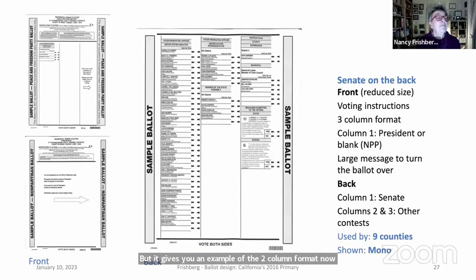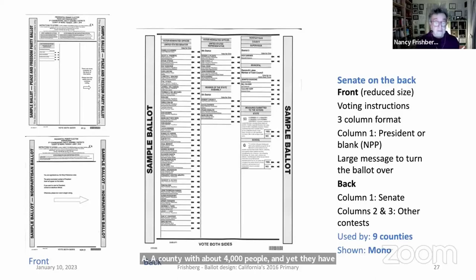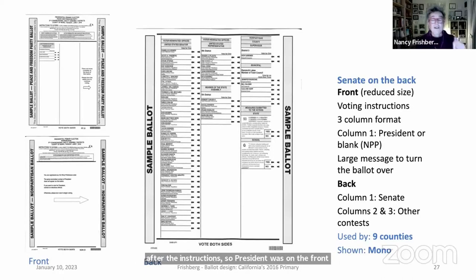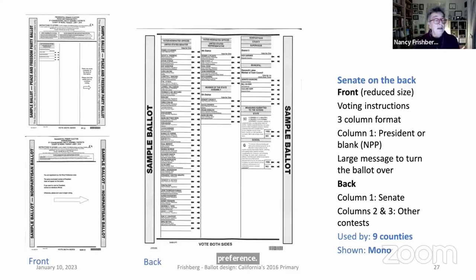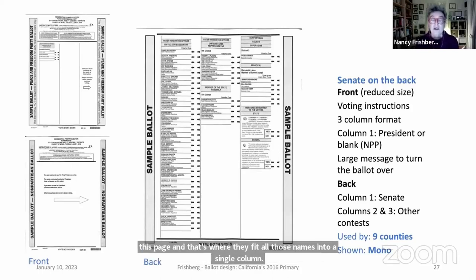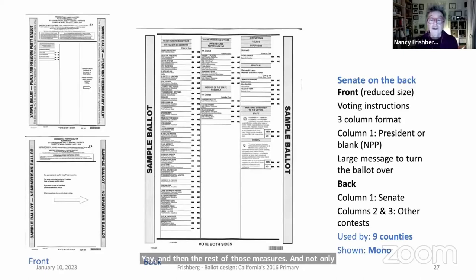Mono County, with about 4,000 people, still conducts the full election like everyone else. They used a three-column format but placed the Senate race on the reverse side to allow more room after instructions. For non-partisan (no party preference) ballots, all 34 Senate candidate names fit into a single column on the reverse side, with local measures like Proposition 50 and a local school proposition also included.